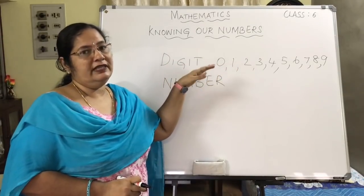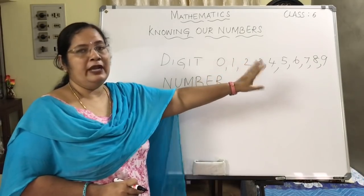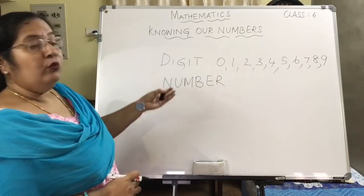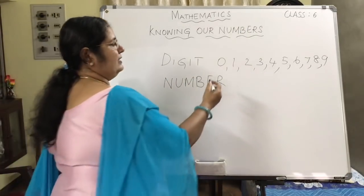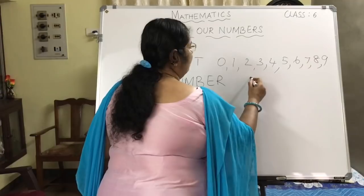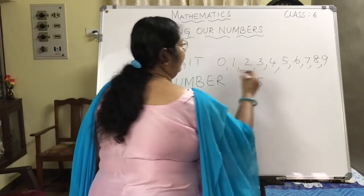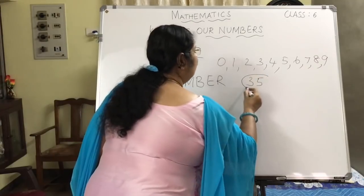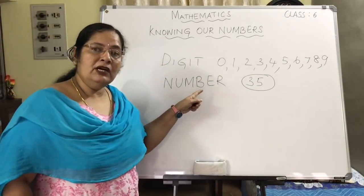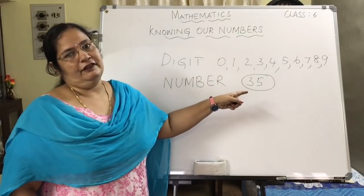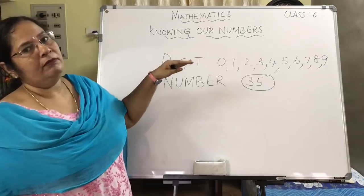So what are the digits? 0, 1, 2, 3, and so on up to 9. Now when you put digits together — suppose you take the digit 3 and the digit 5 and put them together — you get the number 35. So digits are put together to form numbers.